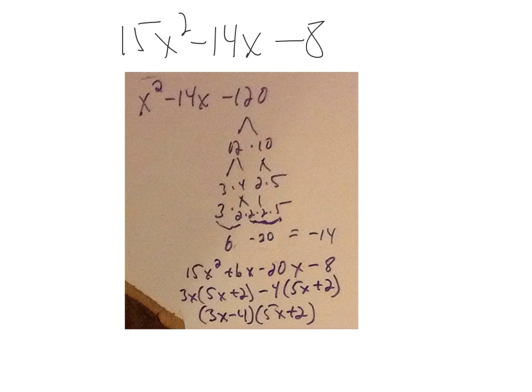What I was trying to do with the factoring earlier is, let me get my pointer going. So I multiplied the 15 times the negative 8, and that's where I got the negative 120 from.